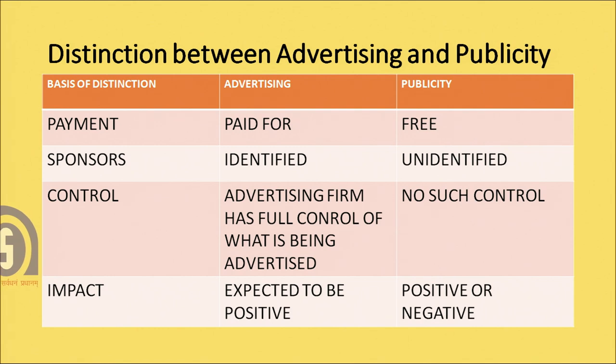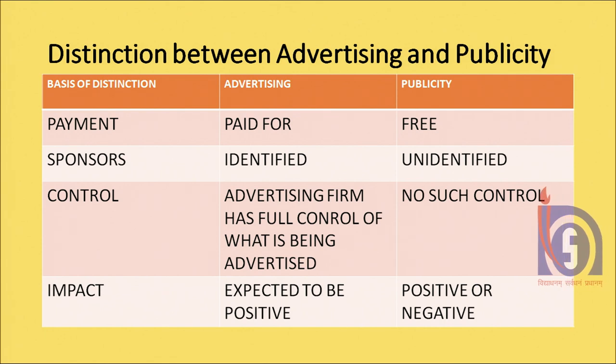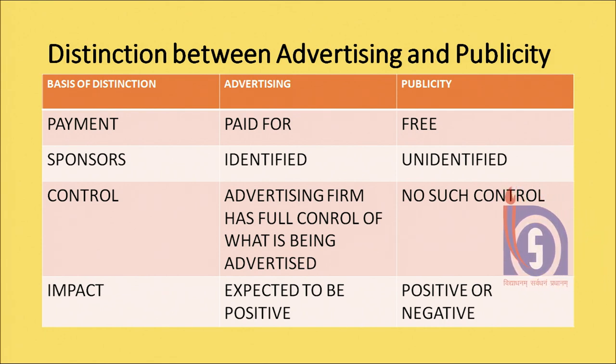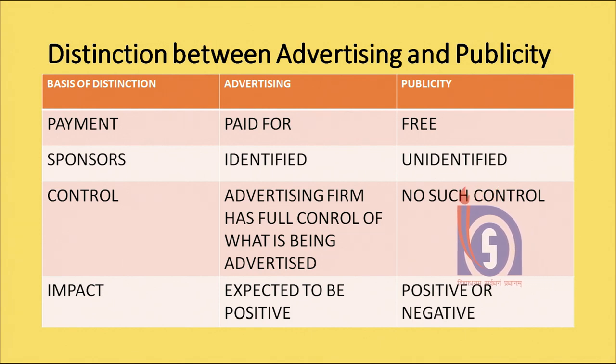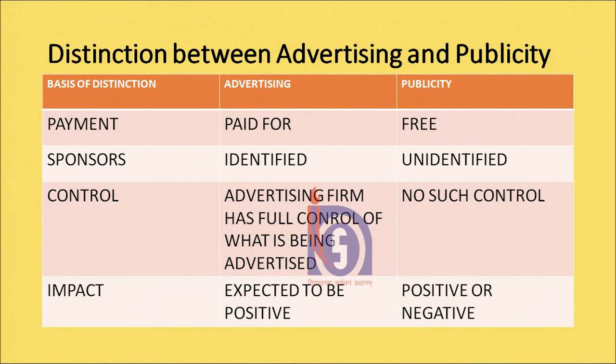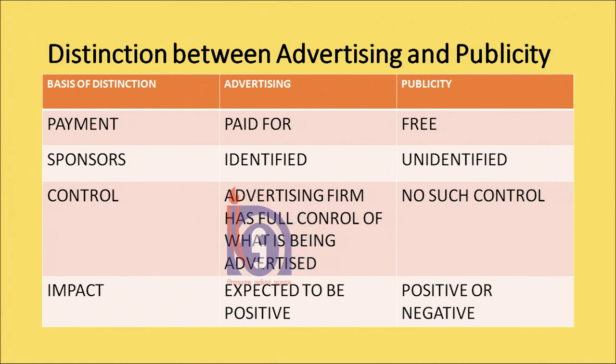If we talk of control over the content of the message, because advertisement is well thought of and well paid for, advertisers have full control over what is being advertised. However, since publicity comes from third parties, there is no such control over the content. If we talk of impact, advertisement is expected to generate positive impact. But in case of publicity, the impact can either be positive or negative — as in the case of Maggi noodles.